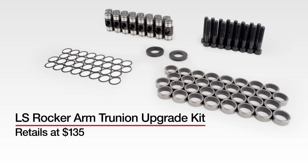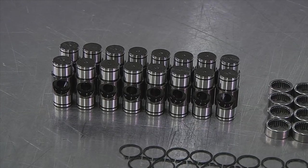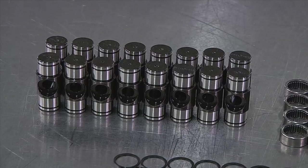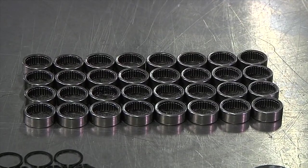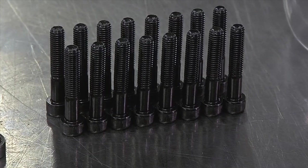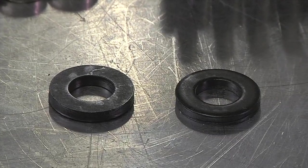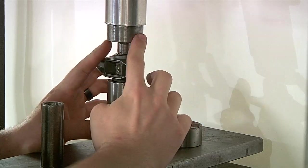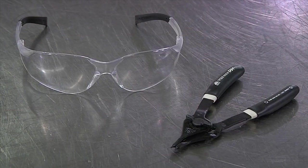Retailing around $135, this is one upgrade you can't afford to pass up on. This kit includes 16 rocker arm trunnions, 32 rocker arm bearings, 32 rocker arm retaining clips, 16 rocker arm bolts, and 2 assembly washers. Assembly also requires the use of a press, a pair of snap ring pliers, and don't forget your safety glasses.